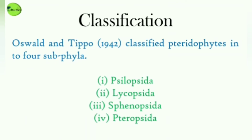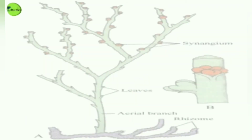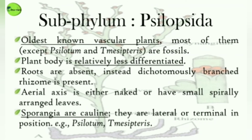Now let's look at the classification of pteridophytes. Oswald and Tippo in 1942 classified the pteridophytes into four subdivisions: Psilopsida, Lycopsida, Sphenopsida, and Pteropsida. We will talk about each of them one by one.